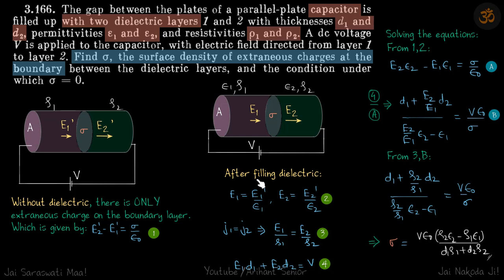We need one more equation that we will get from the potential difference that is given. V is equal to E1 D1 plus E2 D2. Now we have got a lot of equations we just need to solve it. From 1 and 2 we will get rid of E1 dash and E2 dash and we will get this equation.